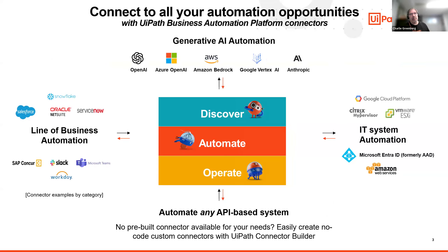You also gain an understanding of what's available in Studio Desktop and Studio Web regarding curated activities associated with the connector. Each connector has two missions in life: integrate and automate. We have three major categories — connectors for line of business, connectors for IT system automation, plus connectors for generative AI automation. And if there's no prebuilt connector available, our connector builder allows you to easily create custom, no-code connectors for the systems your automation requires.